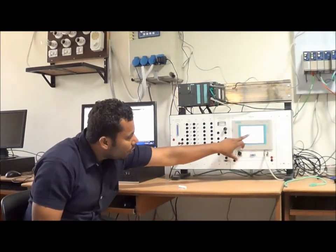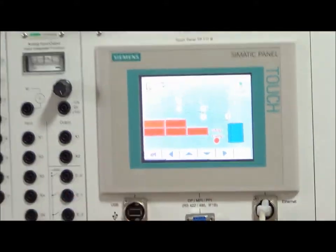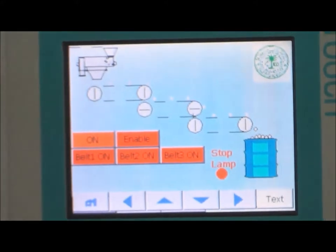We have done a project of conveyor belt control system. Here we are transporting iron ore over 3 conveyor belts. These are the 3 conveyor belts which are shown in this HMI screen.